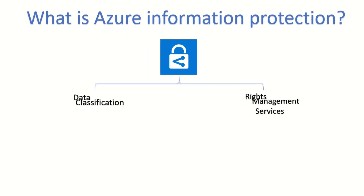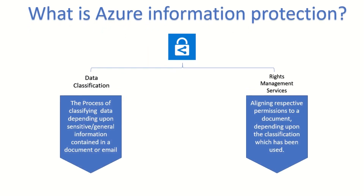From a definition perspective, data classification is the process of classifying documents or emails depending upon the sensitive or generic information that it contains. Whereas rights management service means the process of aligning different permissions to a document depending upon the user who is trying to access that document.